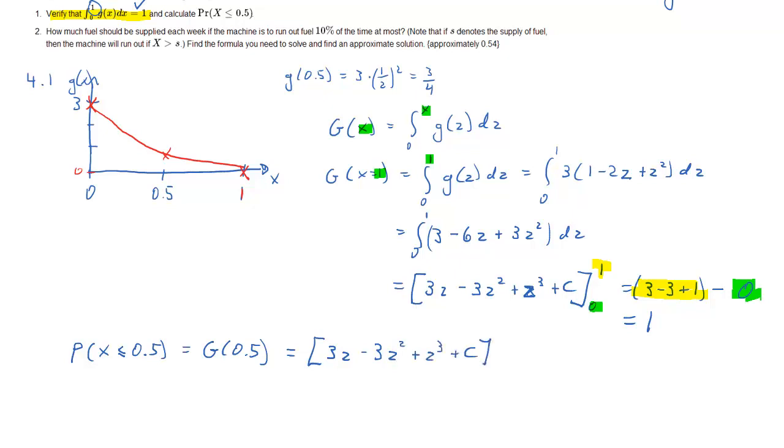But now, instead of from 0 to 1, we need from 0 to 0.5. So again, we plug in 0.5 first and we get some term. And then we subtract whatever value we get when we plug in 0 into the squared term. Of course, we know that already from the previous calculation. If we plug in 0.5, or 1 over 2, is 3 over 2 minus 3 over 4 plus 1 over 8.